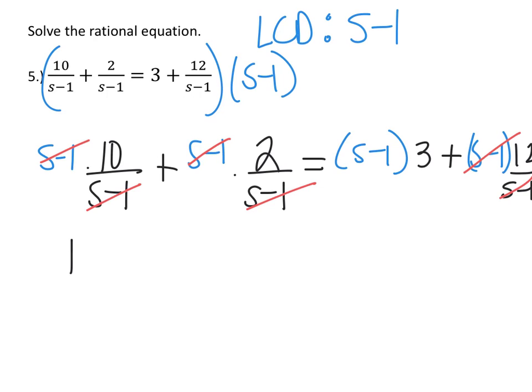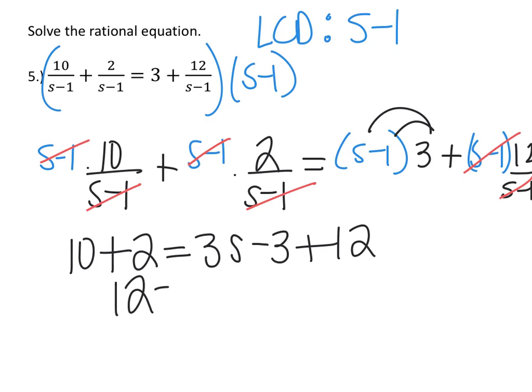So I'm just going to have 10 plus 2 equals distribute the 3, 3s minus 3 plus 12. So I'll have 12 equals 3s plus 9.